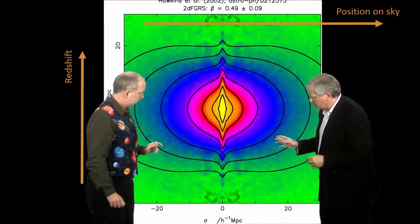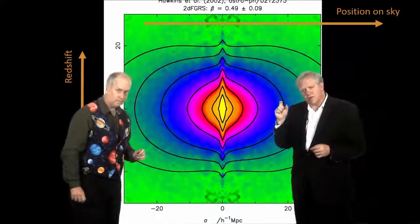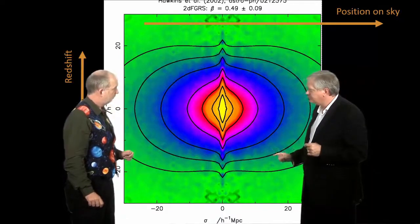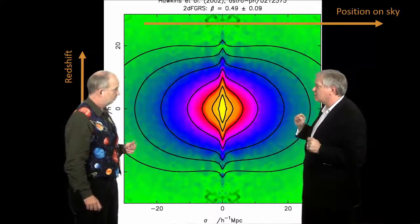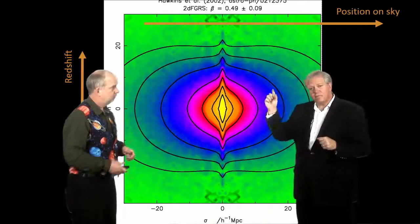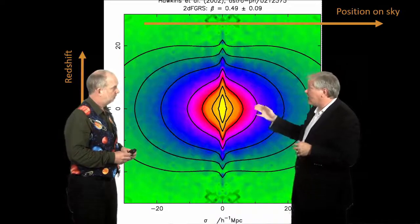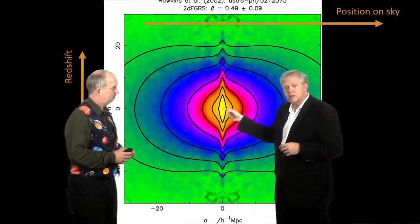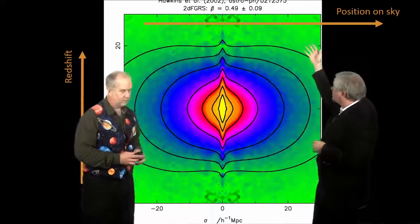So, what you're going to go through is you're going to measure how far apart they are in velocity. Put that on the plot. How far apart they are on the sky as the other one. And you do that for every pair of galaxies. And then when you've got a lot of galaxies, you'll make it that color. When you have very few, you'll make it that color.